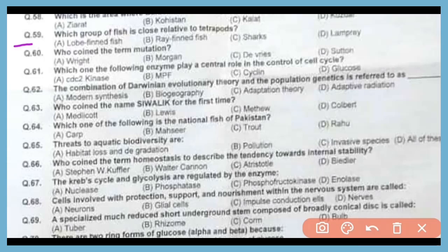Question 59. Which group of fish is a close relative of tetrapods? The correct answer is option A. Lobe-finned fish is a close relative of tetrapods and an example is the coelacanth fish. Question 60. Who coined the term mutation for the first time? The correct answer is option D. De Vries coined the term mutation and also presented the mutation theory.